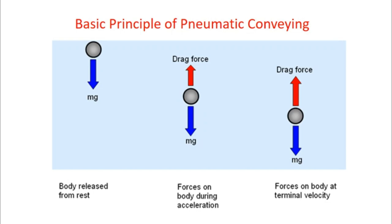The particle moves at a constant velocity and never picks up more acceleration to go down. If the drag force is increased above the magnitude of the downward gravitational force, then the particle would suspend in the air stream or may move upward. This is the main reason why particles suspend in the air stream — when the upward drag force exceeds the downward gravitational force. This is the concept of terminal velocity on which pneumatic conveying is based.